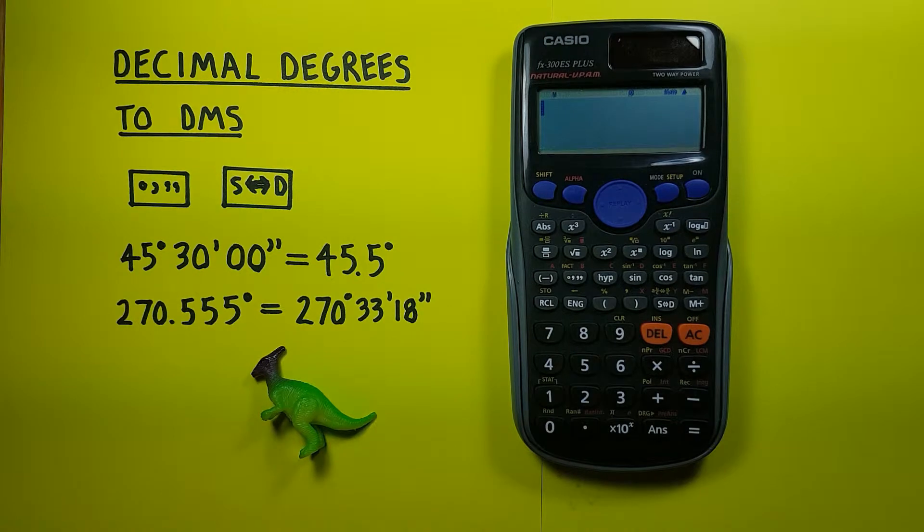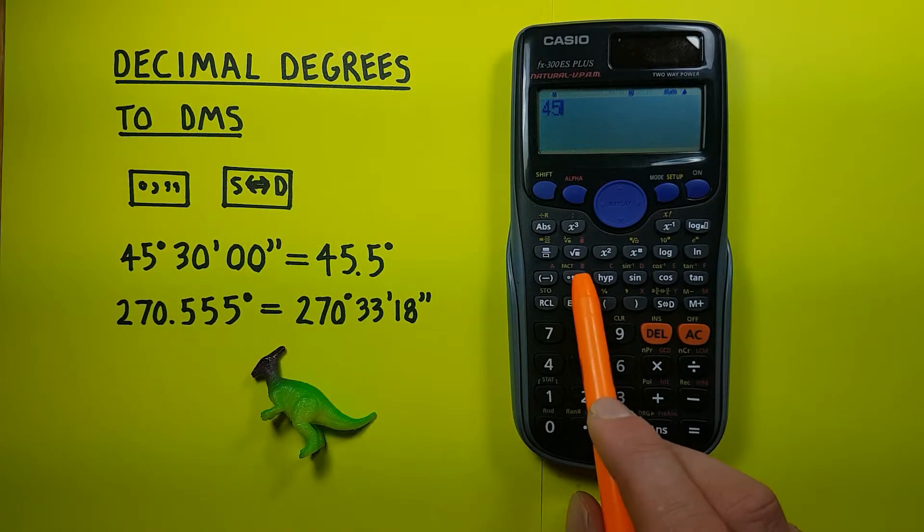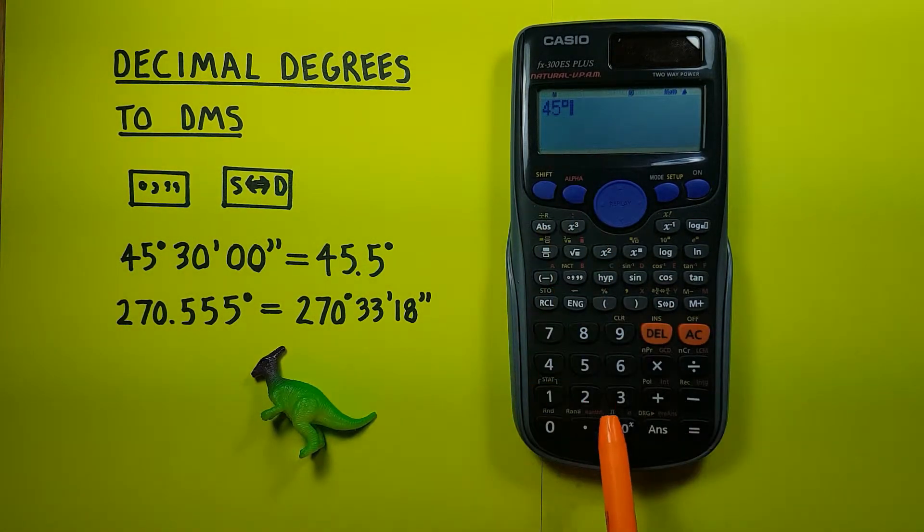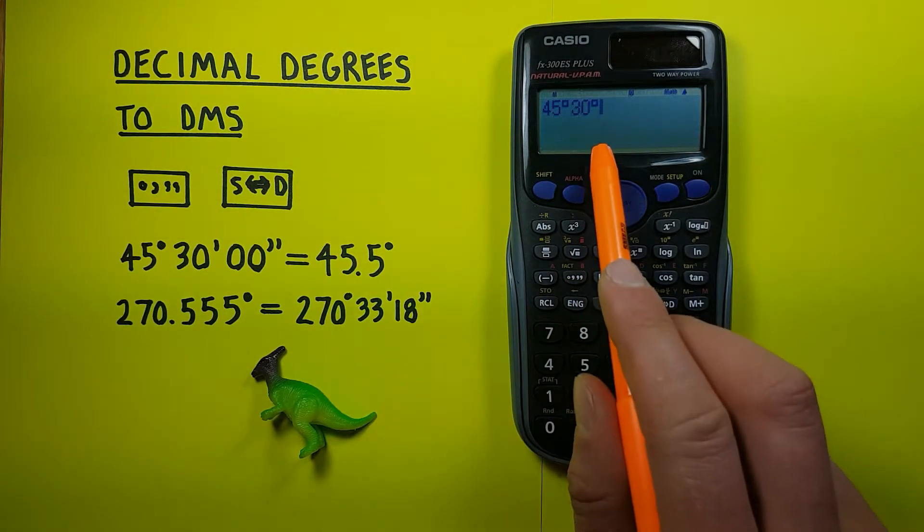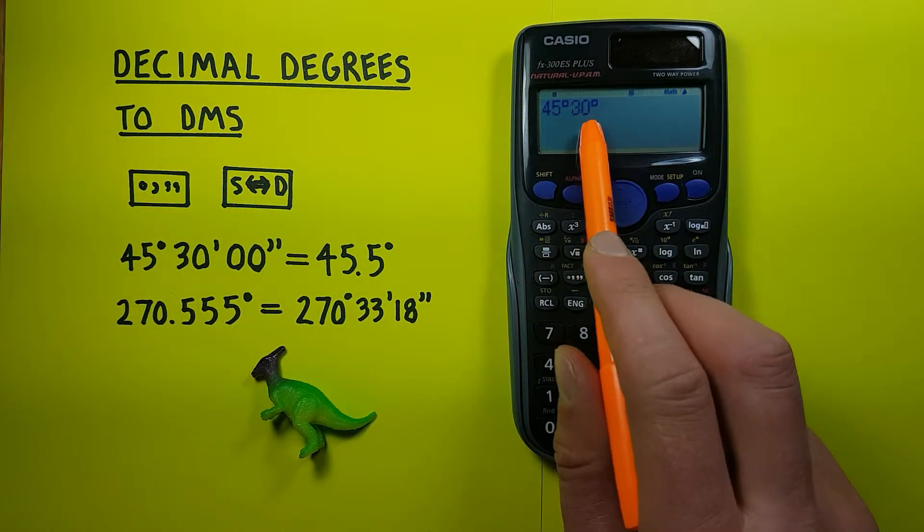We could enter that into our calculator by pressing the 45 degrees part first and then pressing the degrees, minutes, seconds key so that you can see we have a degree symbol that appears. And then the 30 minutes, press it again, we get another little degree symbol there, but since this is the second one that will represent minutes.